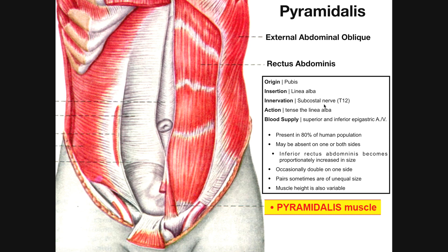Innervation to this muscle is from the subcostal nerve, which originates from the T12 root, and the action of it is to tense the linea alba. If we go through this according to the principle that insertion is pulled toward the origin, that means the tension would be pulling the linea alba downward toward the pubis, functioning to tense the linea alba — making it tighter, more taut. A lot of the other muscles, like transversus abdominis, external oblique, and internal oblique, all tense the linea alba as well, so this probably provides only a minimal contribution relative to those other muscles. But that's its action: to tense the linea alba.